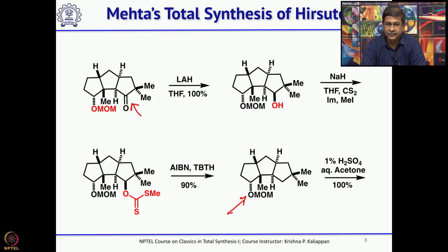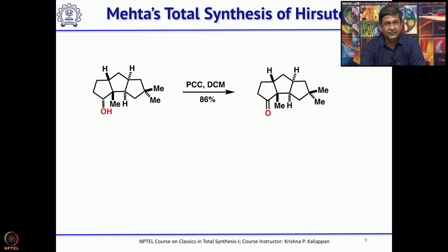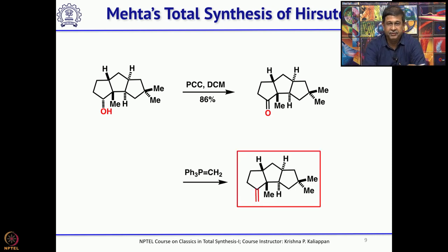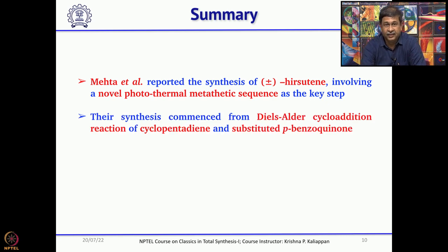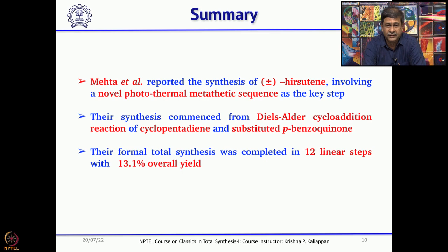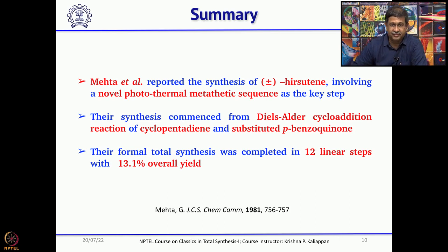The MOM group was removed under acidic conditions to get the corresponding secondary alcohol. The secondary alcohol was oxidized with PCC to get the ketone. Then a simple methylene Wittig gave the final natural product, hirsutene. If you look at this synthesis, the key step was the photo-thermal metathesis sequence, which is also one of the earliest 100% atom economy reactions. The starting material was prepared from cyclopentadiene and 2,5-dimethyl para-benzoquinone using a Diels-Alder cycloaddition. Overall, 12 longest linear steps and 13% overall yield — quite competitive.